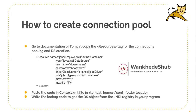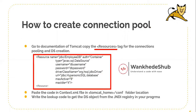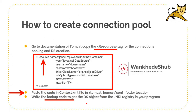Creating a connection pool in your Tomcat server is very simple. The first thing we need to do is look for the Resources tag in the Tomcat documentation, or search for it on the internet using relevant keywords. After obtaining this Resources tag, you need to paste it inside the context.xml file — specifically inside the context tag — and modify it according to your requirements. Lastly, you need to write the lookup code to get access to the connection object inside your connection pool.